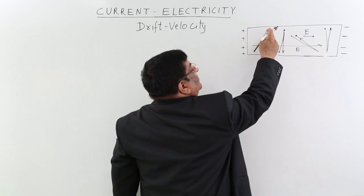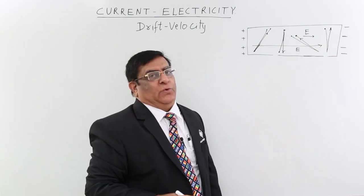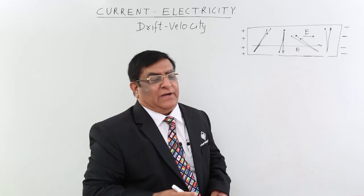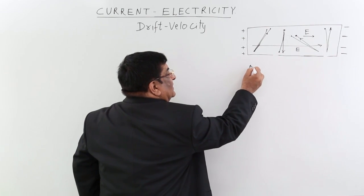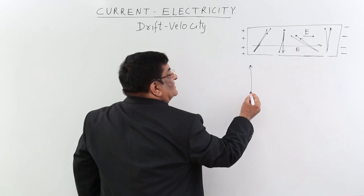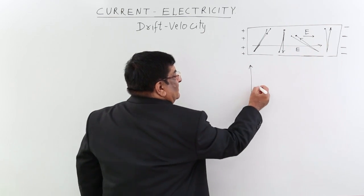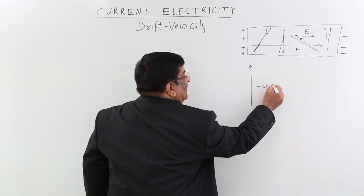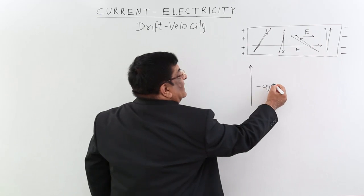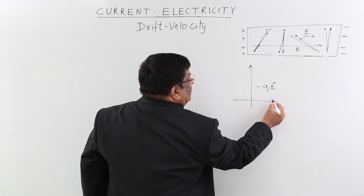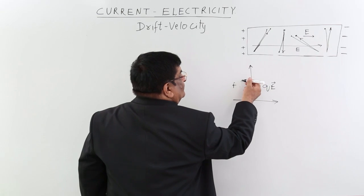The electron was going from here to here before applying the electric field. Now we apply electric field. When we apply electric field, an electron which is going here experiences a force. In which direction? Because the electron is negative, the force is minus QE, and minus shows that the force will be in the opposite direction of E. So if E is in this direction, the force will be in this direction.